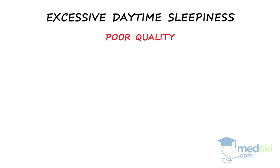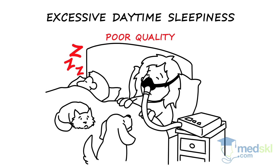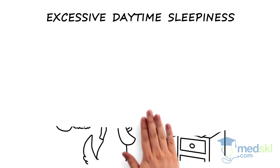Next is a poor quality of sleep. Environmental disturbances such as light, a partner, or a pet, or other intrinsic sleep disorders such as sleep apnea or periodic limb movement disorder could be involved.